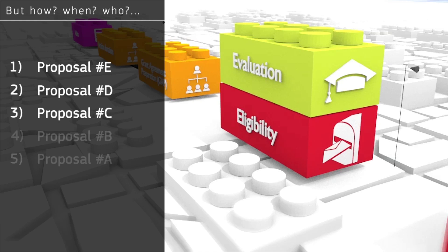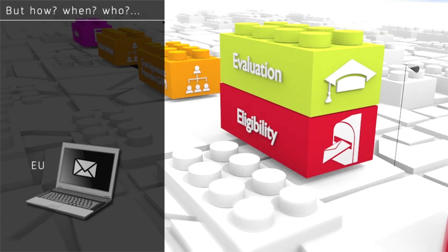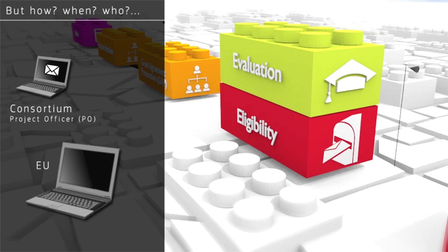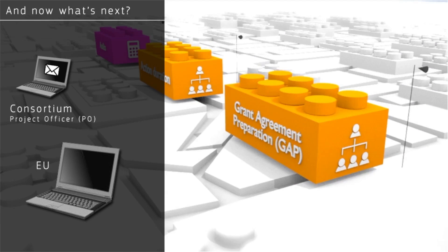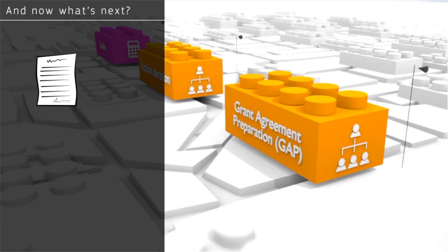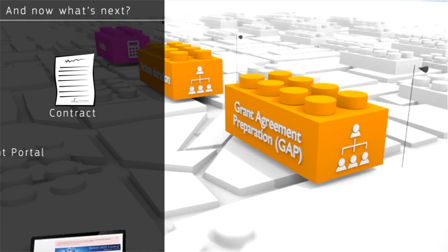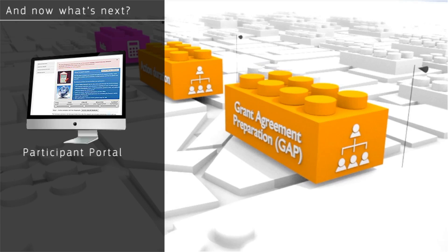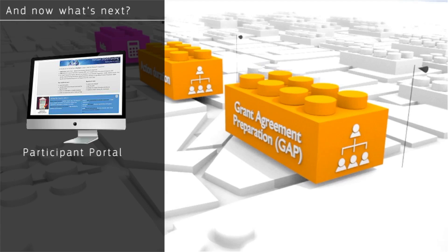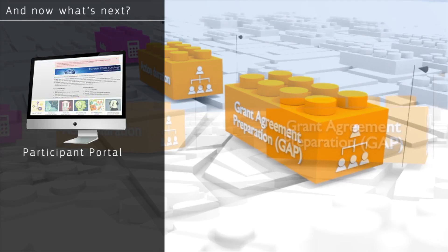Invitation letters are sent to the successful applicants. If successful, the EU will nominate a project officer who will manage the grant agreement preparation and monitor the progress of the project during its entire life cycle. The EU will draw up a contract known as a grant agreement with the consortium. The consortium and the project officer, on behalf of the EU, will discuss the technical details of the contract via the grant management service in the participant portal, and when both sides have agreed, it can be signed electronically.